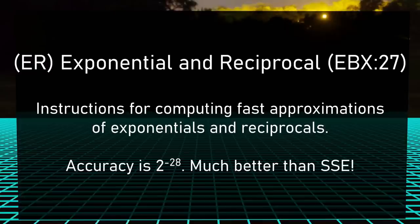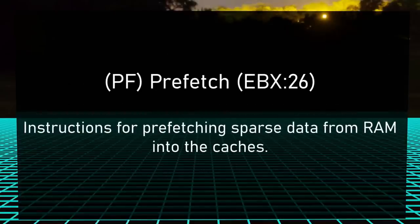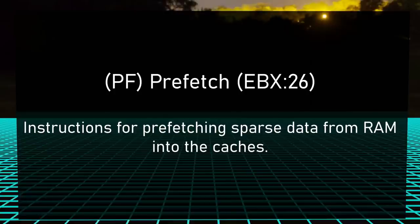Then we've got ER, the Exponential and Reciprocal instruction set. The ER instructions compute exponentials and reciprocals — they're really fast but they are approximations, very good approximations, actually better than the SSE reciprocal instructions. CPU ID flag EBX bit 27. Then PF, the Prefetch instructions: sparse prefetching. Gather and scatter instructions are difficult to introduce in a fast way, but PF is a good step toward that. CPU ID flag EBX bit 26.